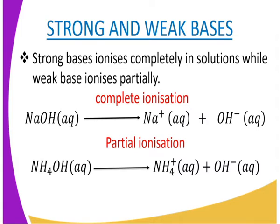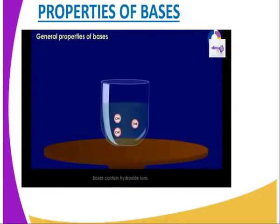Examples include sodium hydroxide. From the equation given below, you can see that sodium hydroxide ionizes completely to give us sodium ions and hydroxide ions in the solution. Ammonium hydroxide ionizes partially, does not ionize completely, and therefore it gives us a very good example of a weak base.